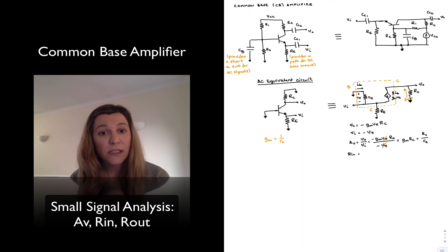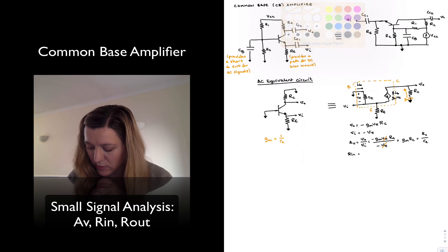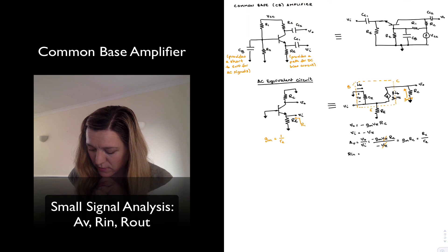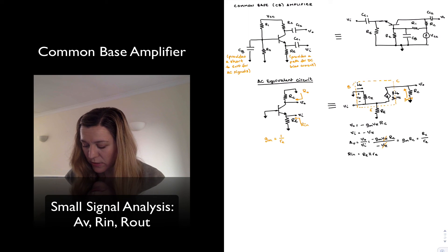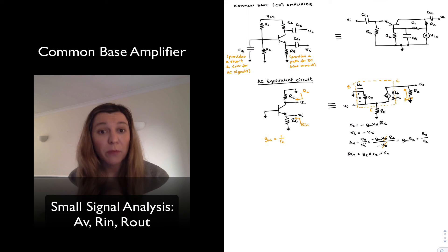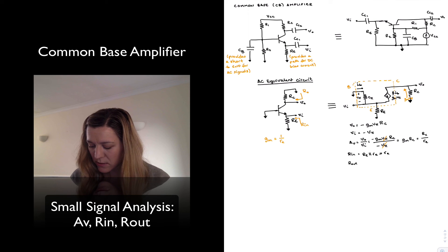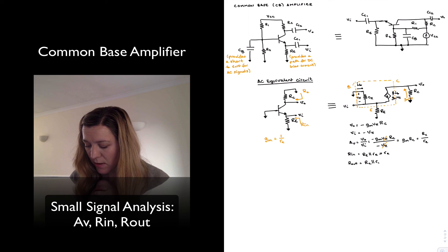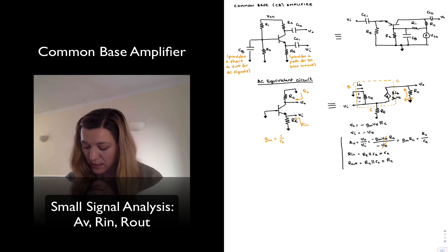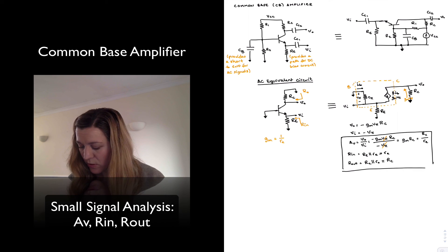The input resistance is the resistance looking into the input terminal, which is the emitter terminal. R_in is going to be equal to the parallel combination of capital R_E and little r_e, which we can approximate as little r_e, since it is typically much smaller than capital R_E. The output resistance is simply RC, or if we want to take into consideration the output resistance of the transistor, RC in parallel with little r_o. Typically RC will dominate. So these are the results for voltage gain, input resistance, and output resistance for the common base amplifier.